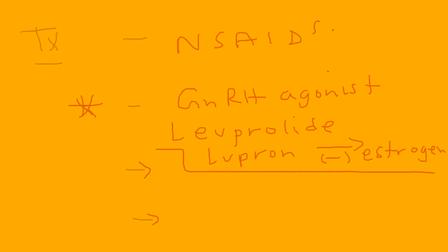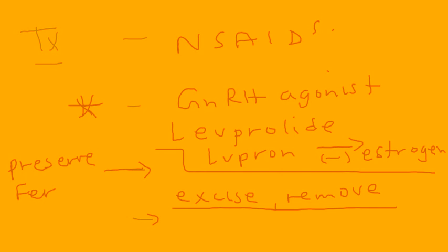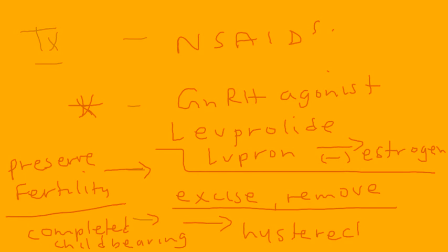The next part of treatment involves excising or removing the lesions, which can be done with a laser or by surgical excision. This option is chosen when you want to preserve fertility — meaning the woman still wants to have children. However, if she has completed her childbearing, then the option is hysterectomy — removing the pelvic organs entirely. That's a quick summary of endometriosis.